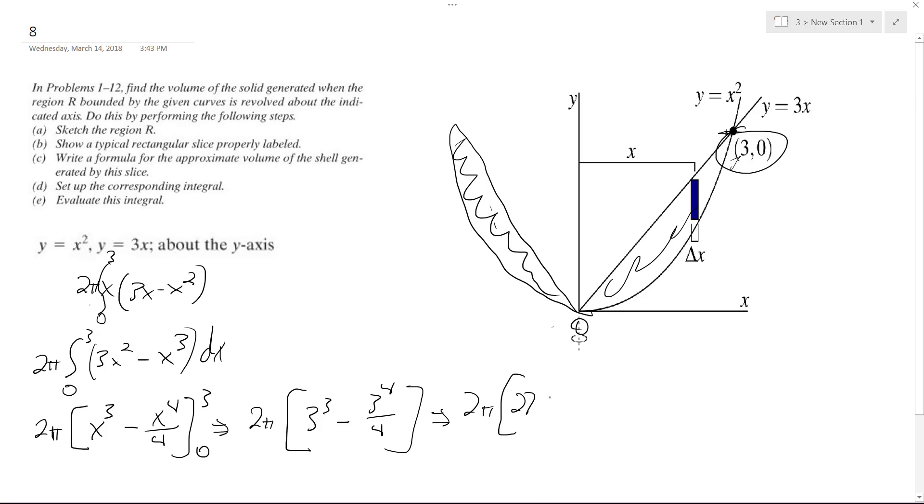And finally, what this comes down to is the volume equals 27π over 2.